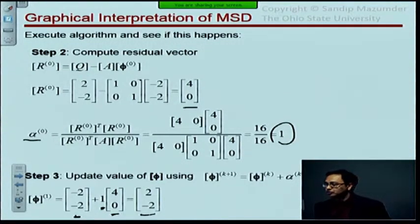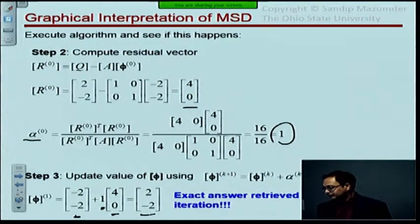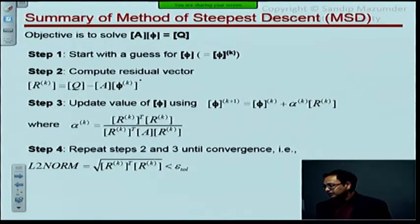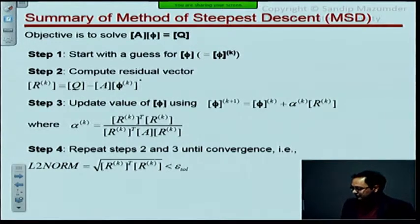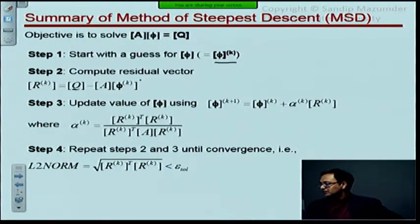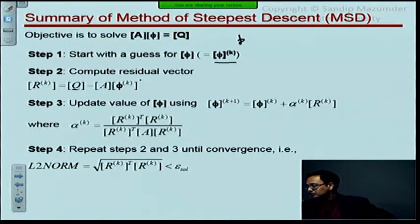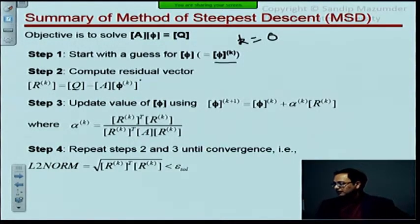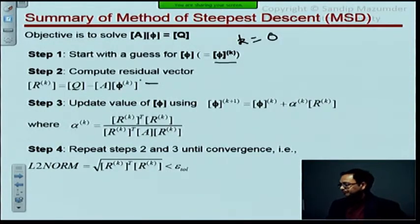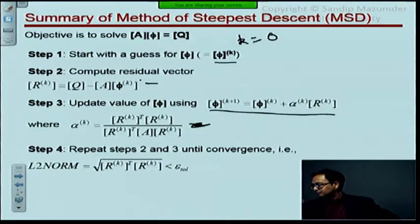Here's the summary again of the method of steepest descent. I have this in the previous lecture notes but I've just summarized it here. So you start with an initial guess. Basically when you start off k is equal to zero, your iteration index. And then you calculate the residual at the first iteration or zeroth iteration, and then you update your solution. You calculate your alpha, then you update the solution. So this step actually comes before this step. You first calculate alpha from the residual. Then you plug it in here and you update your solution.